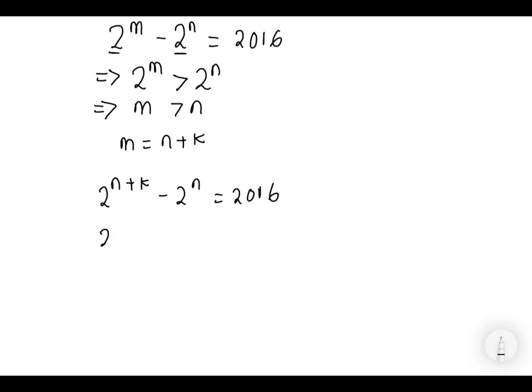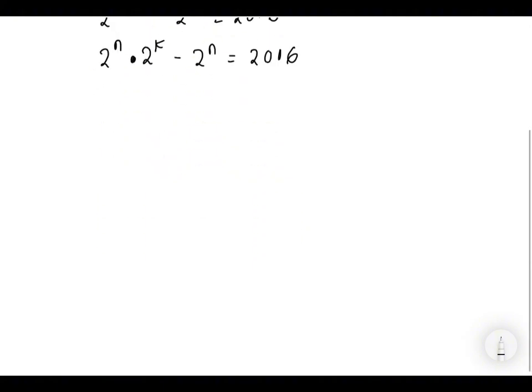Notice that 2 to the power n plus k can be written as 2 to the power n times 2 to the power k. So we are going to take out a common factor which is 2 to the power n.